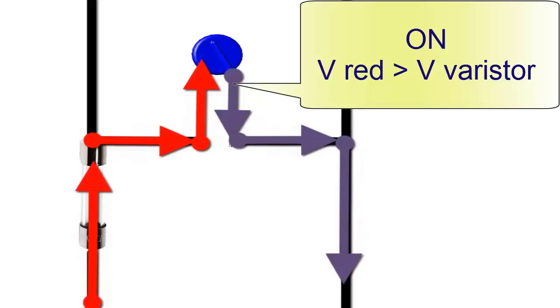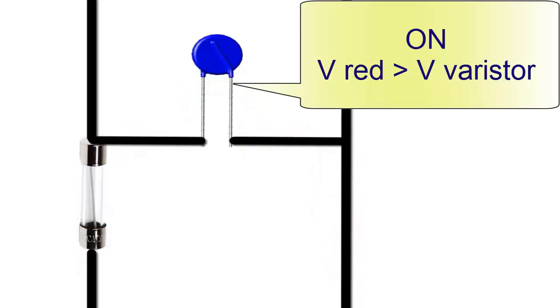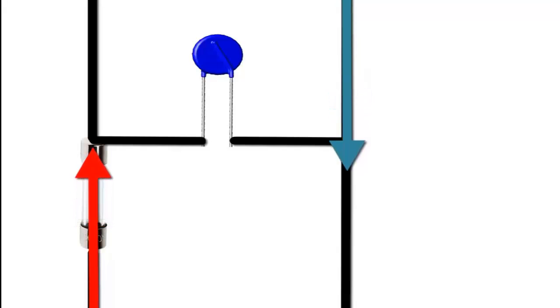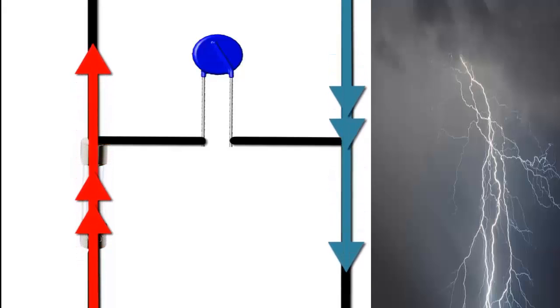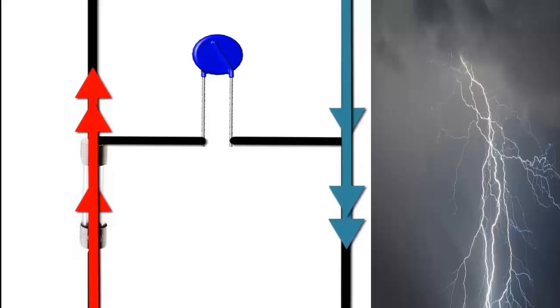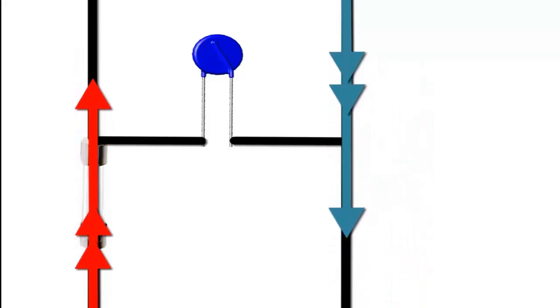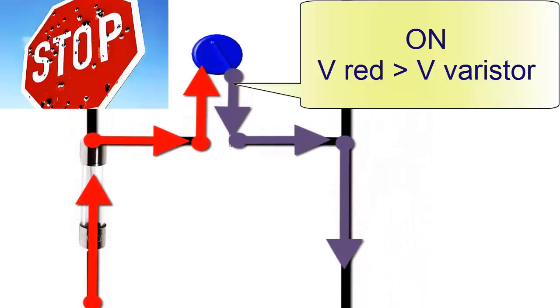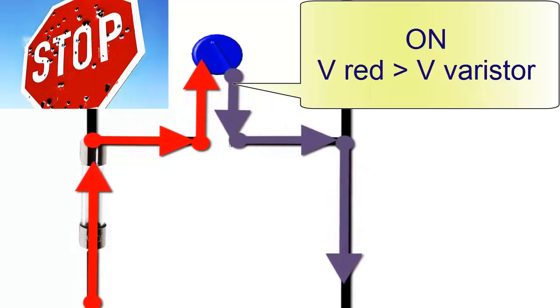The varistor is a semiconductor device with a nominal voltage rating. When subjected to a voltage spike exceeding its nominal value, such as that caused by lightning or a fluctuation in the power grid, the varistor activates.